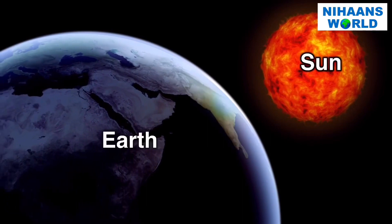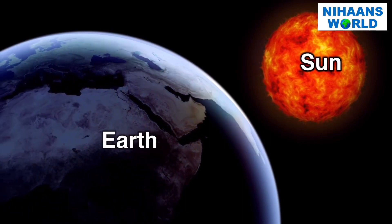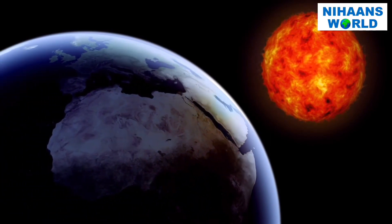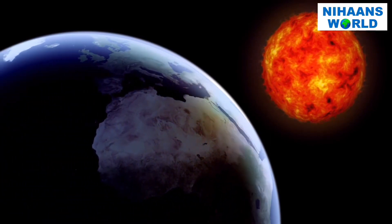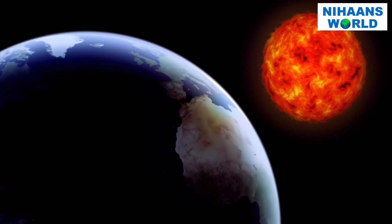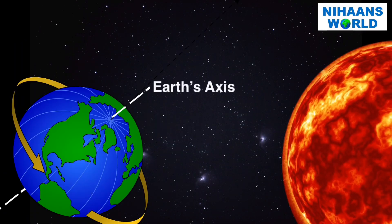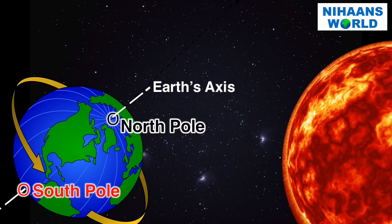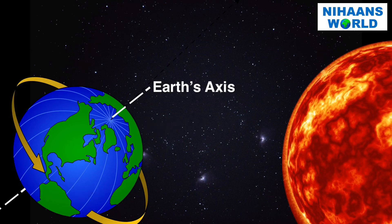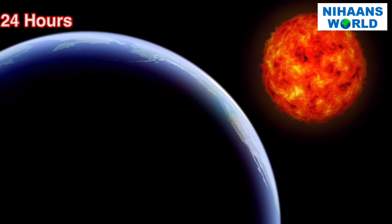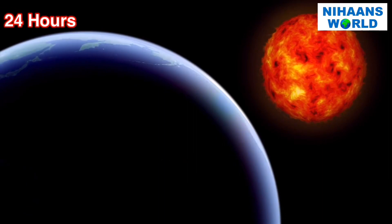The sun is in a fixed position in the solar system. The earth constantly rotates on its own axis, which is an imaginary line that runs from the north pole to the south pole through the center of the earth. This rotation goes from west to east and takes 24 hours to complete one rotation.